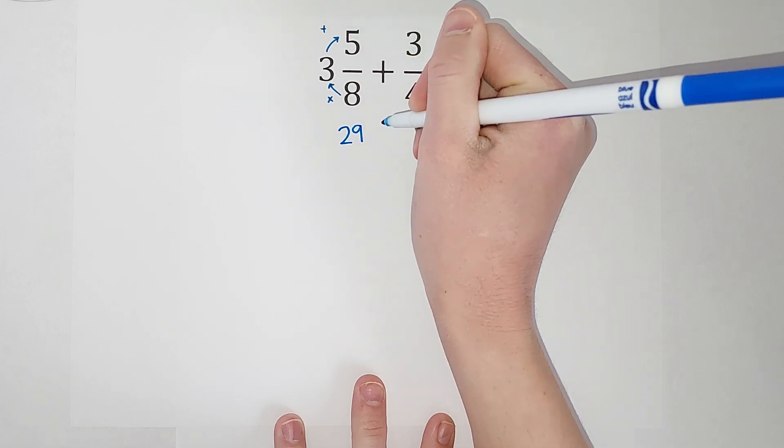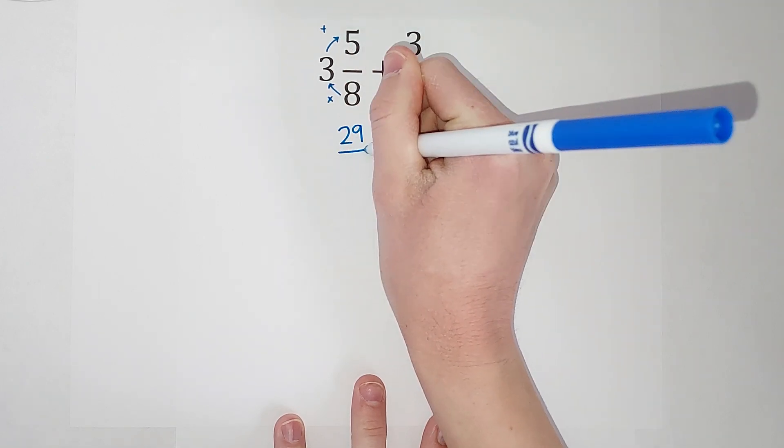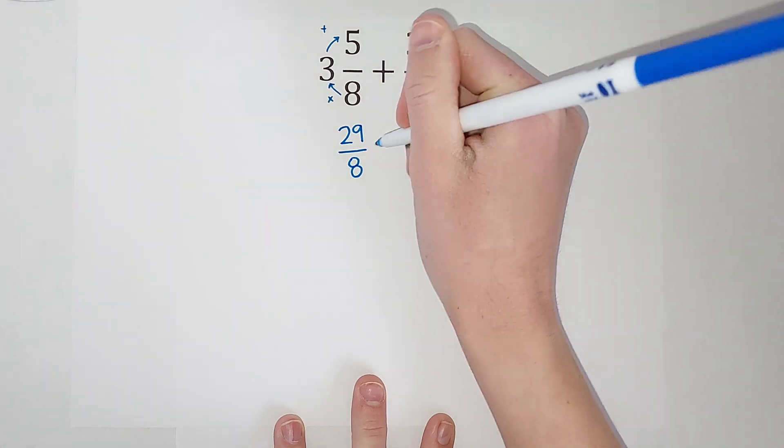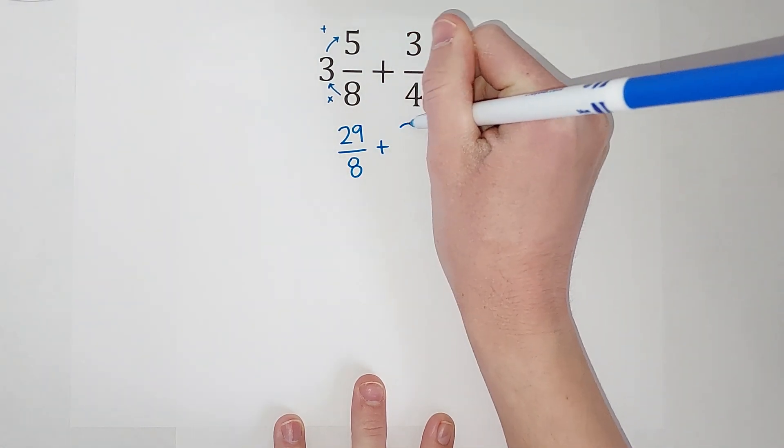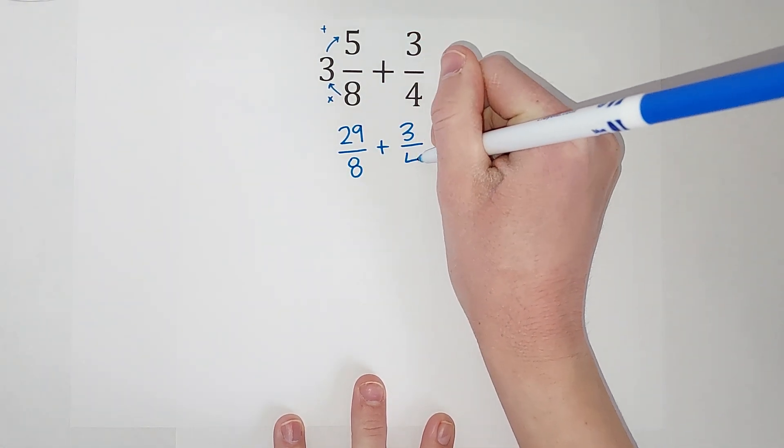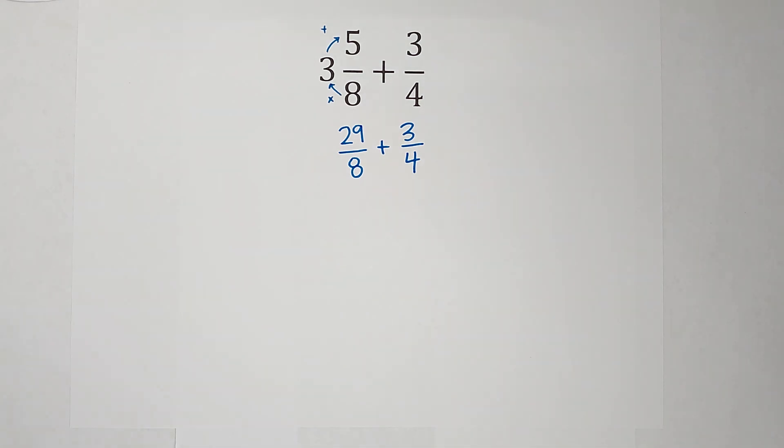For my improper fraction my denominator is still 8, and we are adding 3/4. The kind of crummy news about when we add fractions is that your denominators do need to be the same, I know.